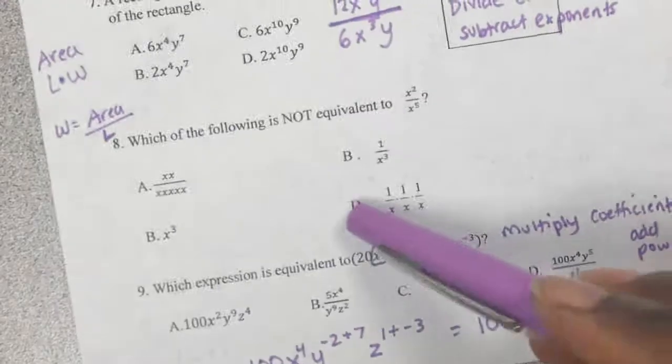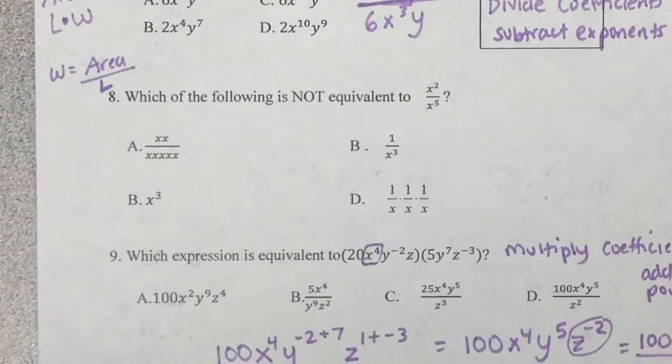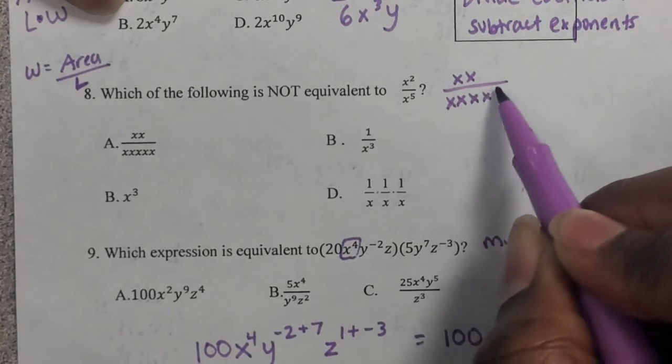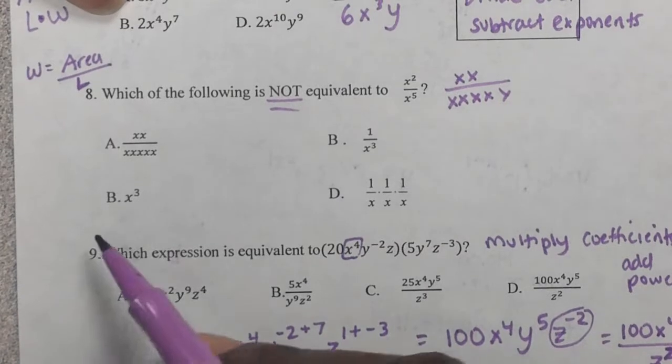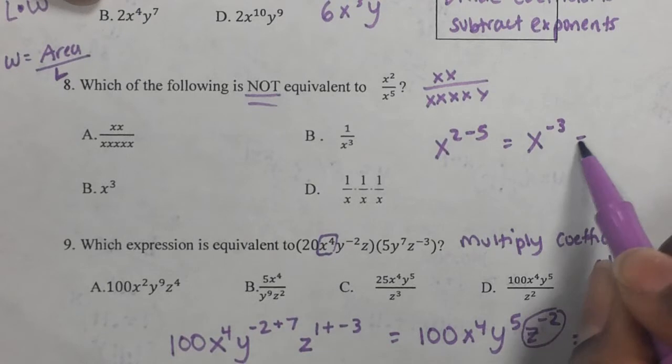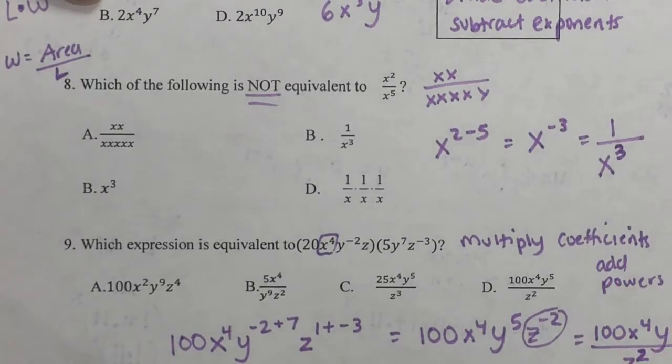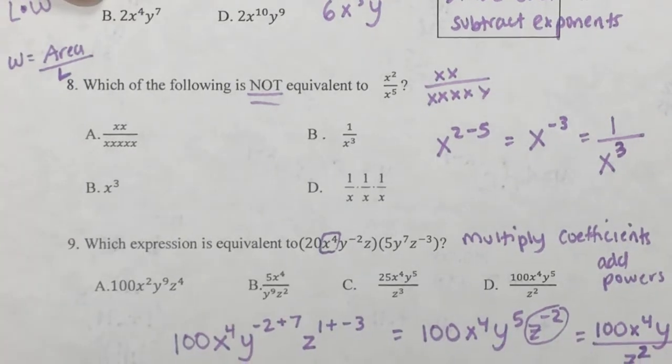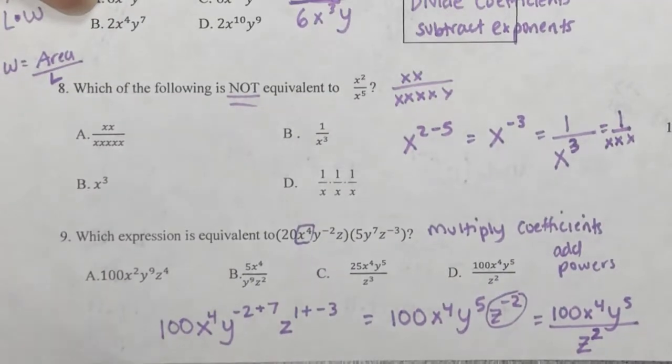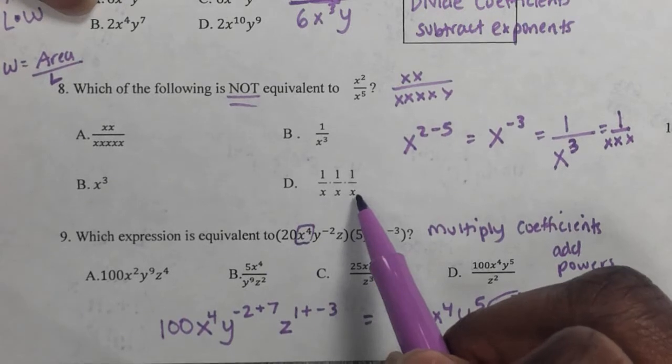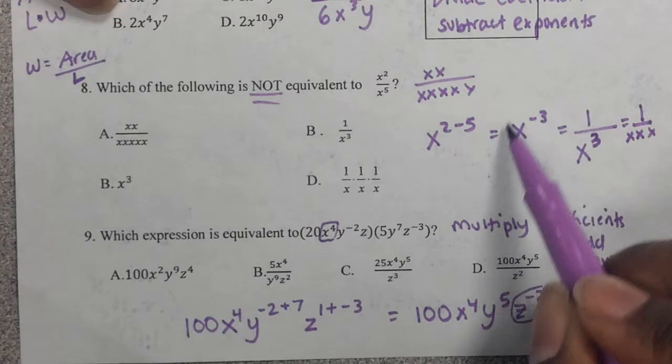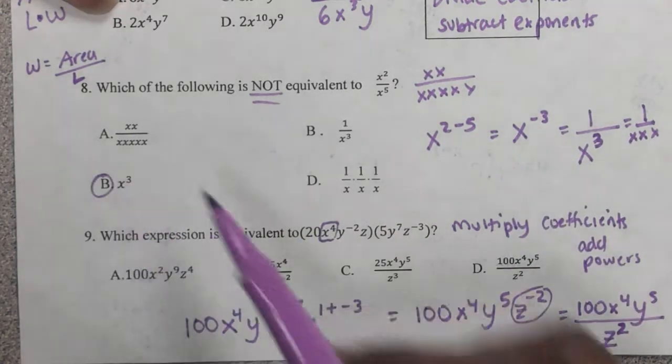And I think that might be number 8. Number 8 was that one problem that we went over the other day, and I said, hey, write it, expand it, then write it simplified, so it can help you eliminate the wrong answer choices. So if you expand it, there's two X's on top and five X's on bottom. It says which of the following is not equivalent. If you go ahead and simplify it, that's going to be X2 minus 5, because it's a division problem, which is X to the negative 3, which is the same thing as 1 over X to the third. So you've got to be careful with your answer choice here. 1 over X to the third can also be written as a 1 over how many X's at the bottom? X, X, and X. So this is the same thing as 1 on top, X, X, X on the bottom. This right here is 1 over X to the third, which is that one. This one here is X to the third, but the equivalent answer was X to the negative 3. So the one that's not equal is that one. That one's tricky.